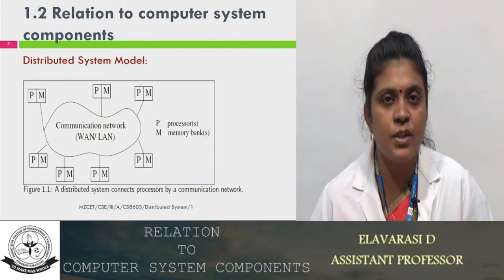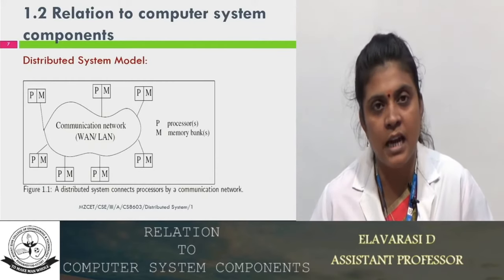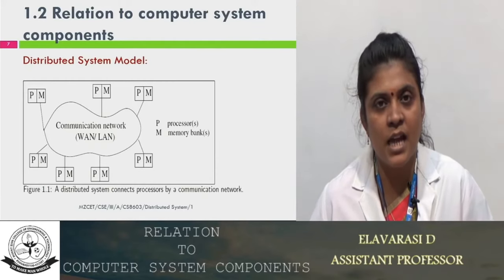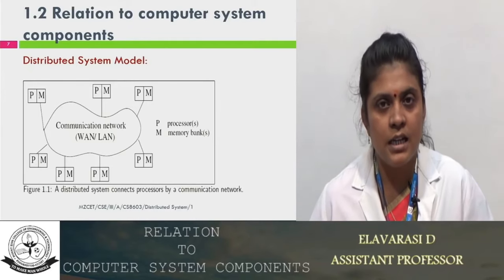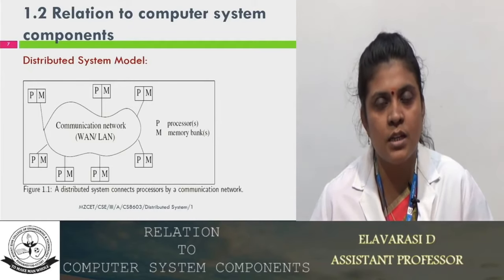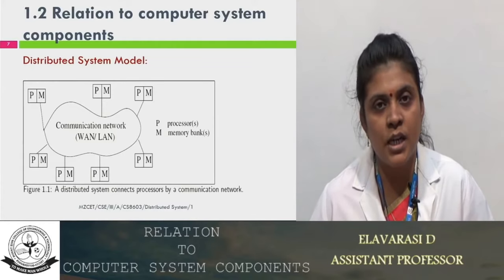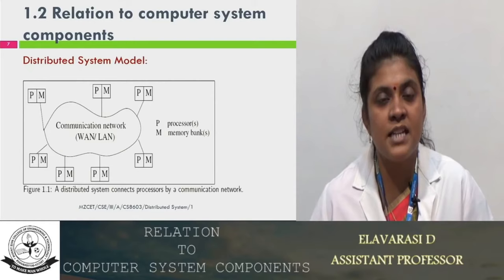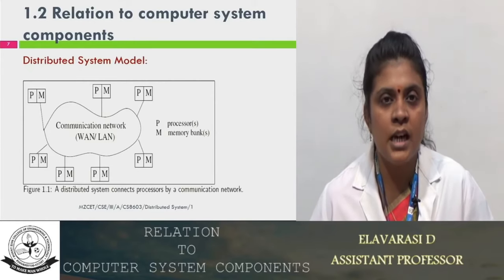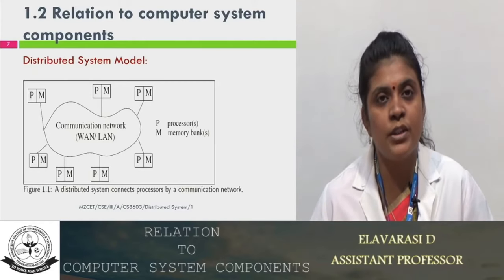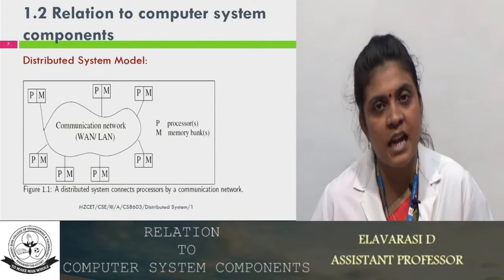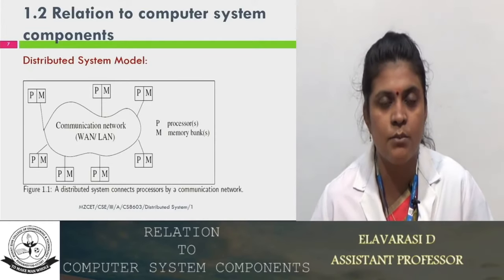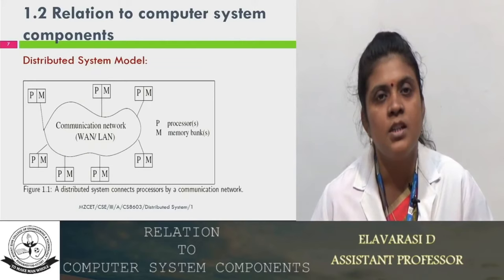The communication time will be larger when compared to the execution time since processes are placed in different geographical locations. Even within a single rack, if a database system produces output from one process that has to be communicated to another process in the same rack, the transmission time is still larger than the execution time. And if data is transmitted to another rack, it takes an even larger amount of transmission time.